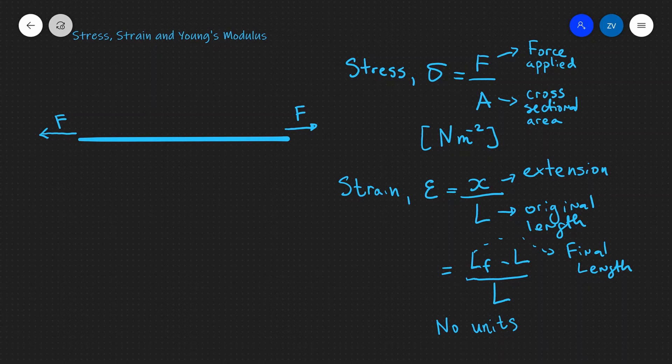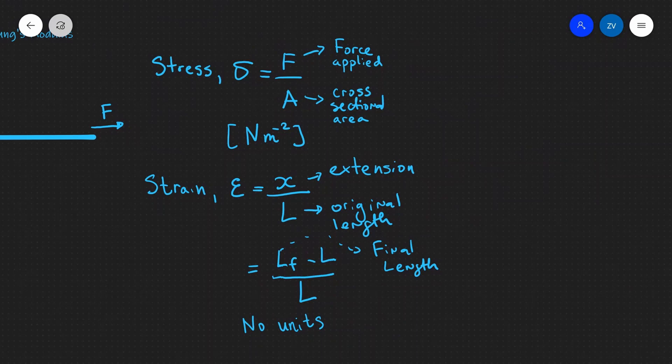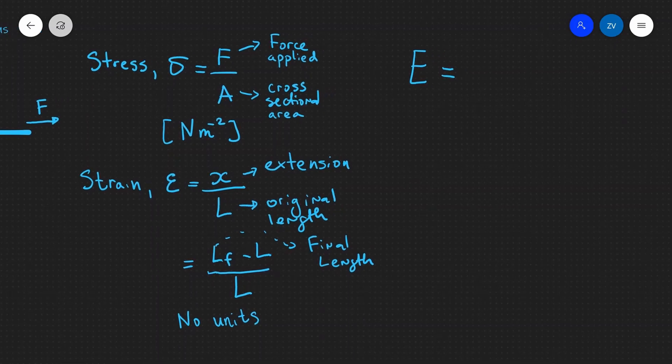Now let's look at the final quantity on our list, which is Young's modulus. Young's modulus is given in your formula booklet with the symbol E. Please don't confuse that with elastic potential energy or any other energy. E in this case is Young's modulus, and it's defined as stress over strain.